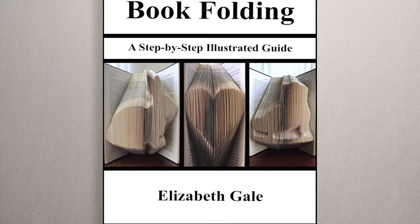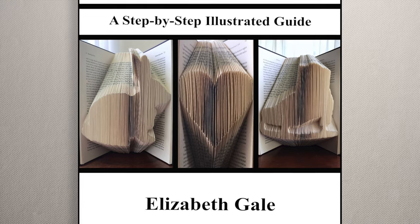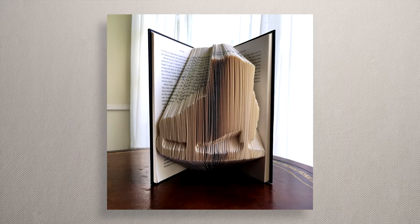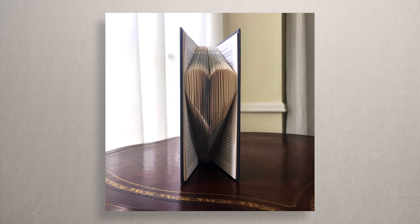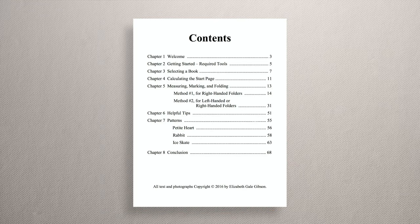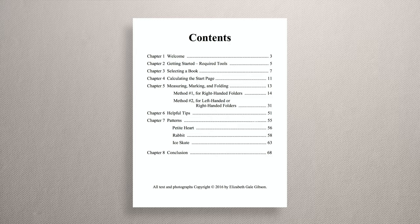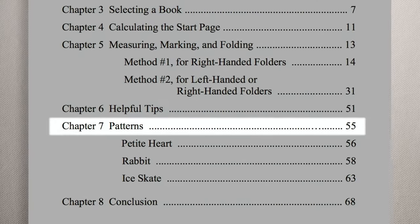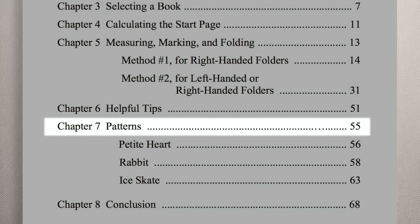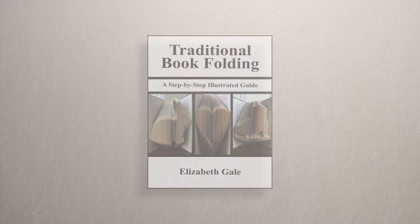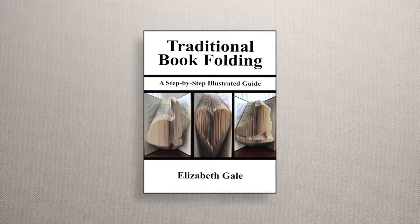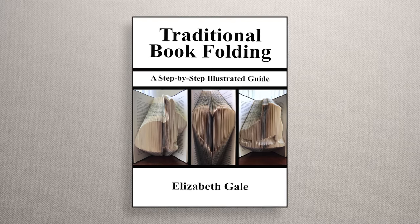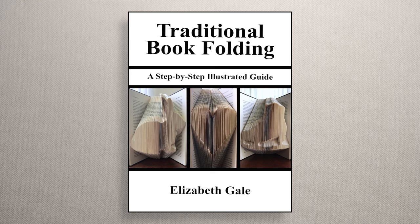The guide also has three patterns in it for you to fold. There's a cute rabbit, a fun ice skate, and a sweet petite heart. To go straight to the patterns, you'll open the PDF of the guide after you download it, and then you'll scroll down to page 55. That's where the patterns begin. And remember that you get the how-to guide with the three bonus patterns in it completely for free, along with your order of the cross pattern.